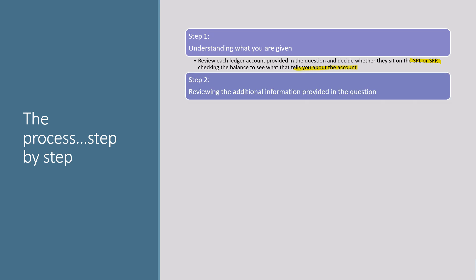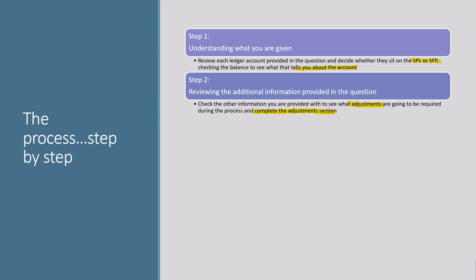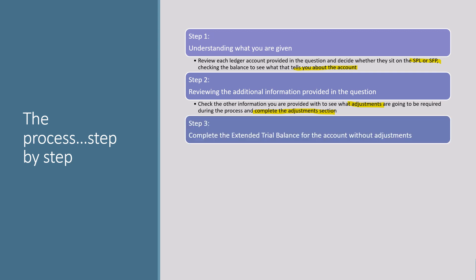Step two is to review the additional information provided in the question. You'll be given ledger balances plus additional information telling you what adjustments are required. Use your DEADCLIC, understand what the adjustments are, understand the effects on the accounts, and then complete the adjustment section. Once you know what your adjustments are and can explain them, you can move on to completing the extended trial balance.